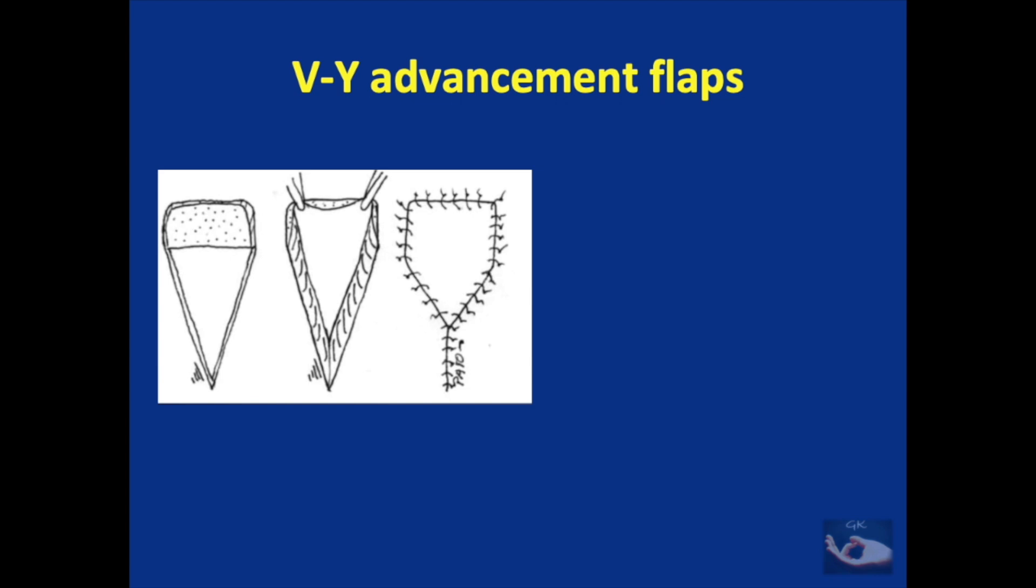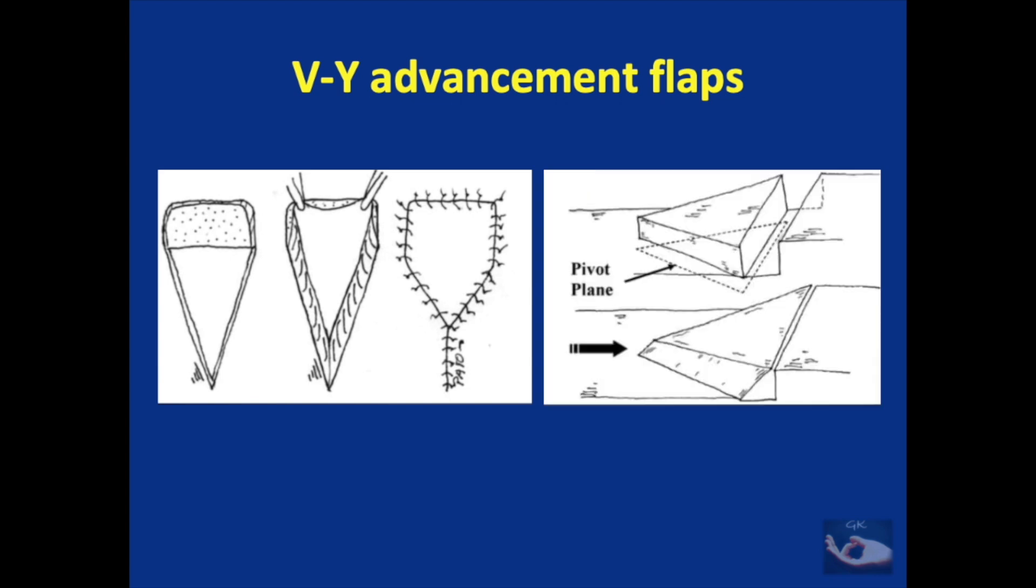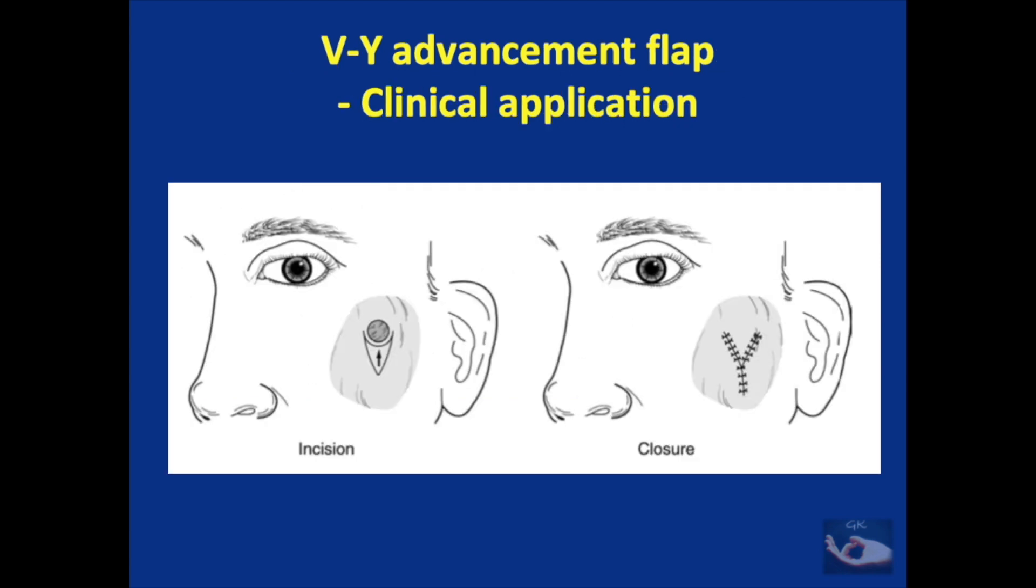So there is no actual pivot point for this flap, but there is a pivot plane. That is, the subcutaneous pedicle of this V flap forms the plane which prevents the flap from advancing further. The V-Y advancement flap finds use in resurfacing defects on the face, cheeks, and sacral pressure sores.